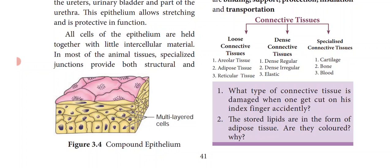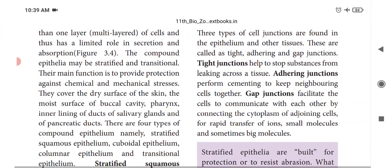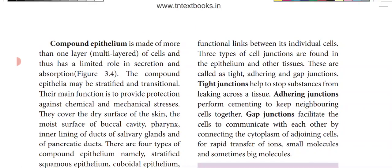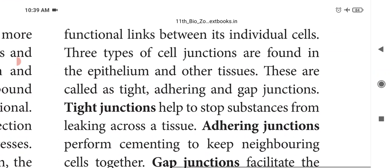All cells of the epithelium are held together with little intercellular material — some material present between the cells called intercellular material. In most animal tissues, specialized junctions provide both structural and functional links between individual cells. There are three types of cell junctions found in the epithelium and other tissues: tight junctions, adhering junctions and gap junctions.